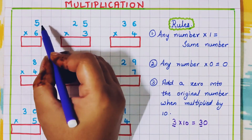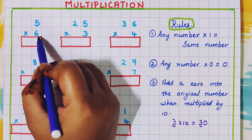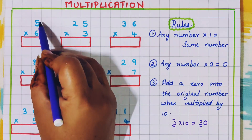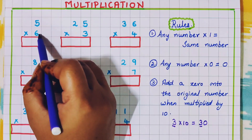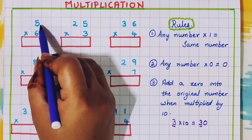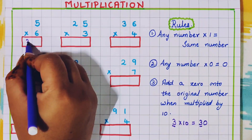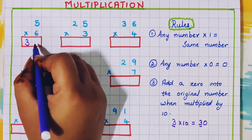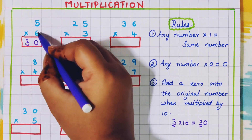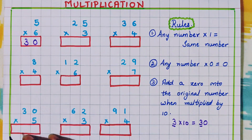Now let's do some problems. Here the first example is a single digit multiplication: 5 into 6. We are going to multiply — 6 5s are 30. Here I will write 3 and just below in the 1s place I will write 0. 6 5s are 30. This is the single digit problem.